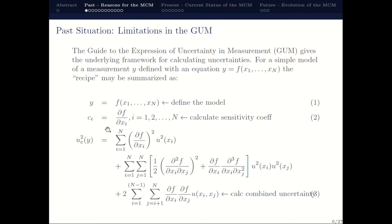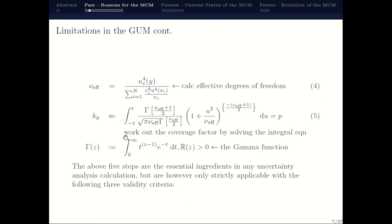After we work out the combined standard uncertainty, we then work out the effective degrees of freedom using the Welch-Satterthwaite formula, and then we can either use tables or directly work out the coverage factor from an integral equation. This is basically the recipe that is used for the GUM.